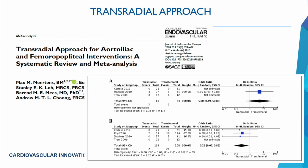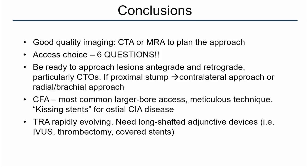Industry has developed hydrophilic sheaths, balloons with 200 cm delivery systems up to 8 mm diameter, and self-expanding stents on 200 cm systems up to 8 mm. Gaps remain for stents of larger diameter, covered stents, DES with shaft length over 135 cm, and DCBs — only one maker offers 150 cm shaft length. In conclusion: good CTA/MRA imaging is essential; answer the six key questions for access planning; be ready to approach lesions antegrade and retrograde; use kissing stents for osteal common iliac disease; transradial approach is evolving but still needs better adjunctive devices.